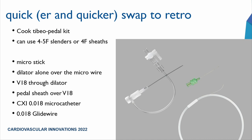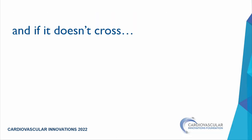I've become quicker to move to retrograde access. I try to avoid sheathing if possible, doing sheathless work from below. I use the Cook tibio-pedal kit — needle, micropuncture wire, then dilator over that wire. Through the dilator I try to advance a V18 wire as my typical retrograde wire. If it crosses, I never need to place a sheath. If not, I use the full Cook tibio-pedal sheath, which accepts an 0.018 CXI catheter for more support and wire exchange.